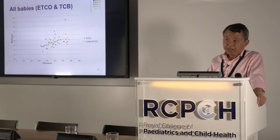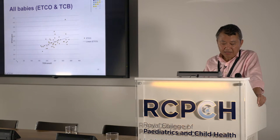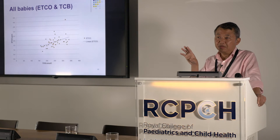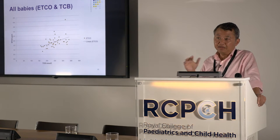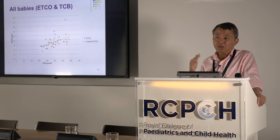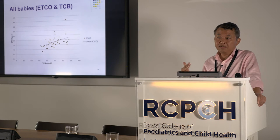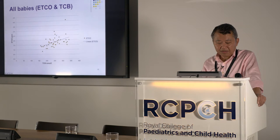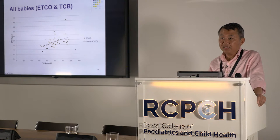One baby had a very high serum bilirubin of 451 micromol/L but a low transcutaneous reading — otherwise the two measurements correlate well. For the ETCO data: the Y-axis is ETCO and the X-axis is transcutaneous bilirubin values. My understanding is that ETCO above 2.5 is high risk, 1.5 to 2.5 is medium risk, and below 1.5 is low risk. In our 46 babies, four were above 2.5 — one at 4.1, one at 2.9, and two at 2.6 — some were below 1.5, and many were between 1.5 and 2.5.